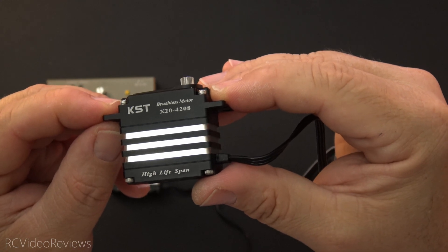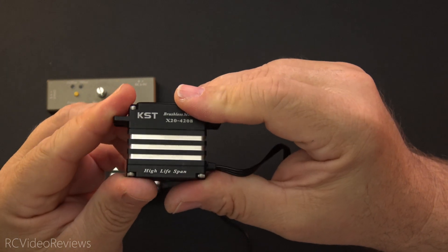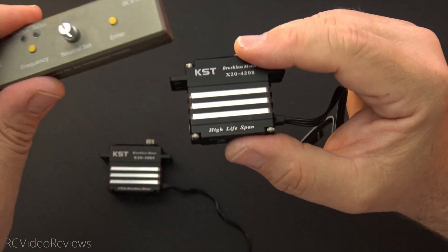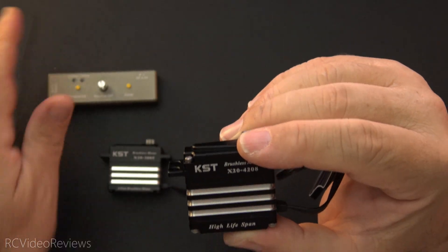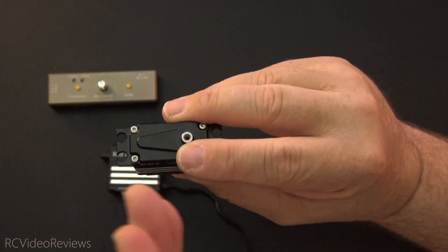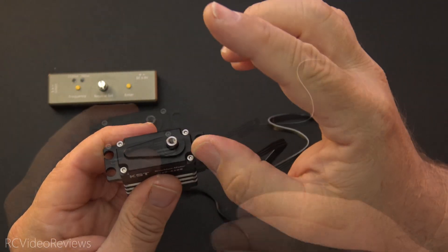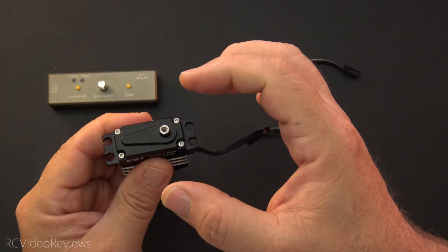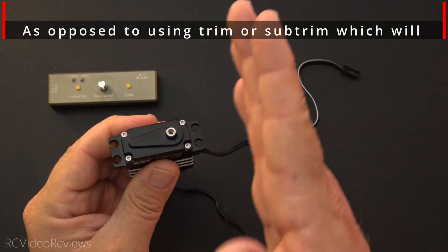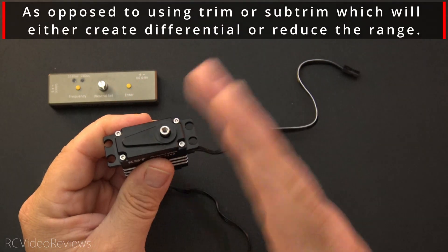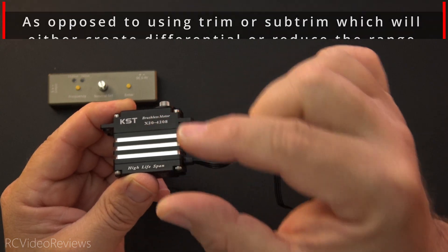The 4208 also supports soft start and programming. The key thing about the programmer is you can adjust the center point, so if you're really trying to get a precise 90 degrees off the edge of the servo for your particular setup, you can dial that center in wherever you want. What's really cool about dialing in your center is you don't lose any travel distance from your end point, so the end points remain equidistant from the center, and you don't lose any range. So a very cool feature if you're trying to get that setup dialed in just right.